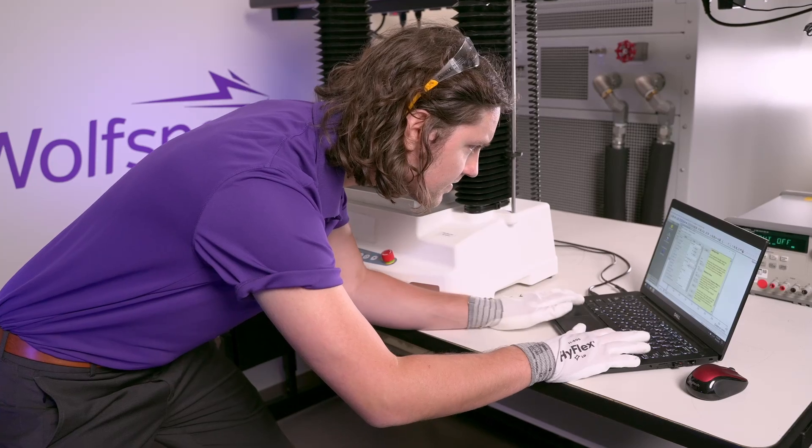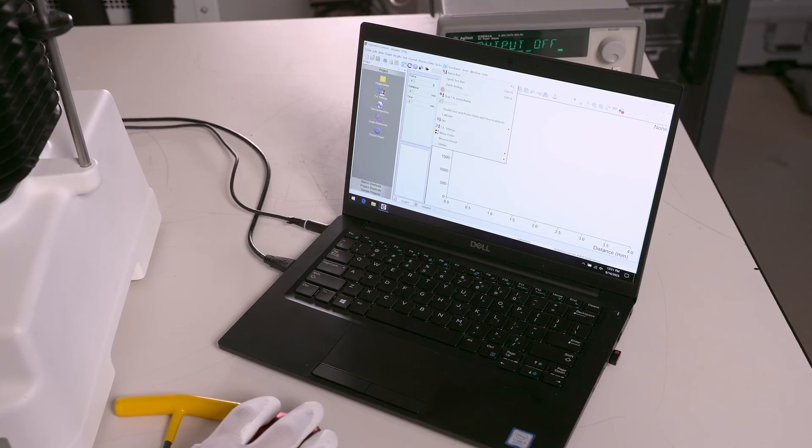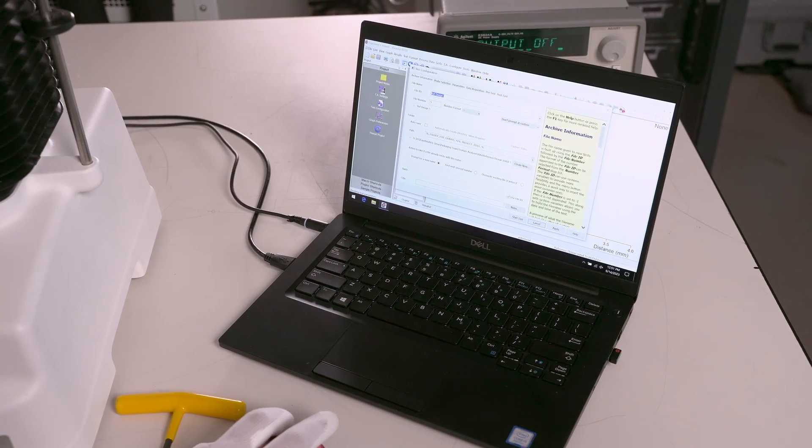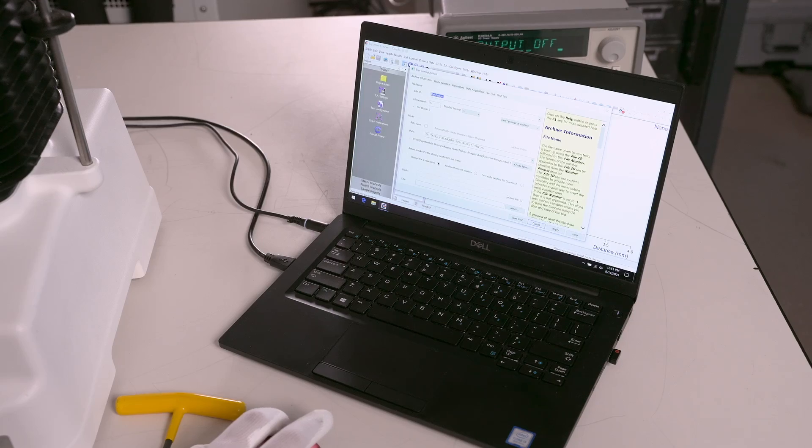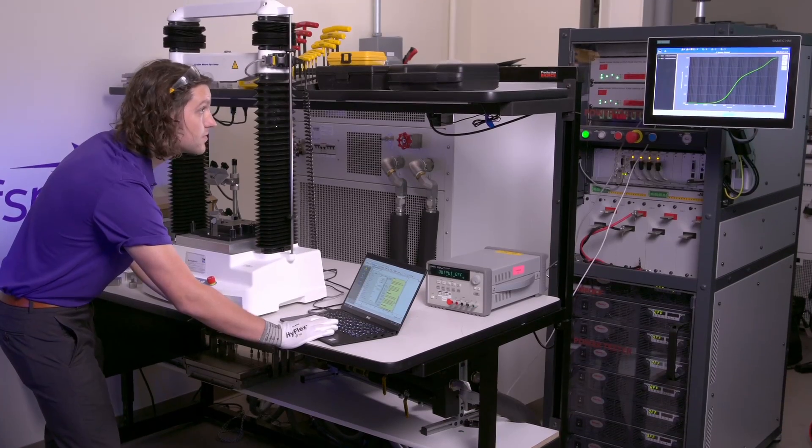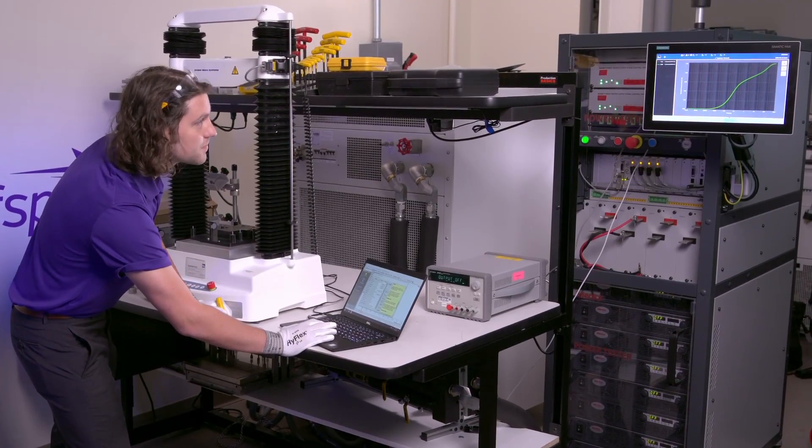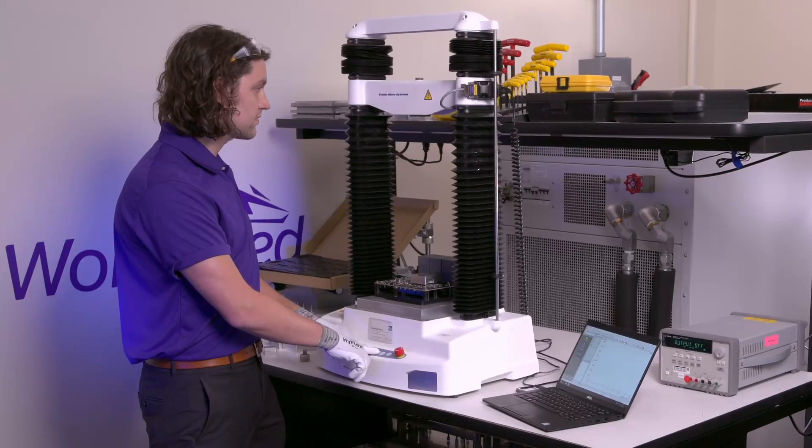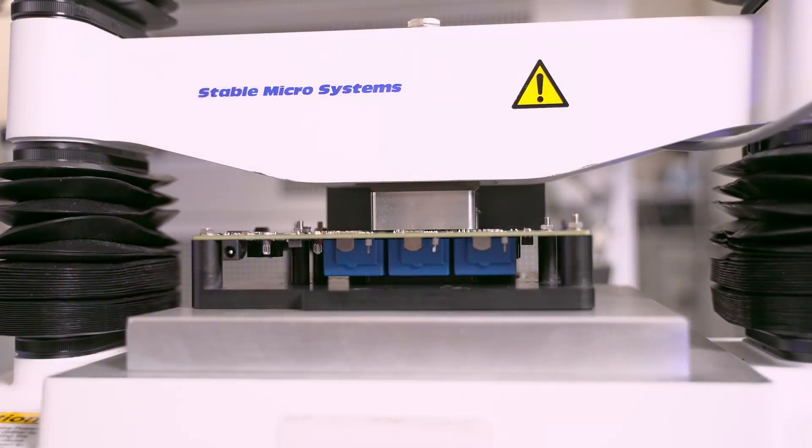Now let's take a look at the automated press. Apply the prescribed press-in force to ensure proper contact without damaging any components. That recommended force can be found online in our Wolfpack mounting guide. Set the press machine to the proper press-in force and speed and run the program.